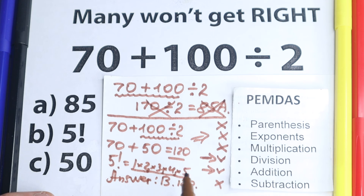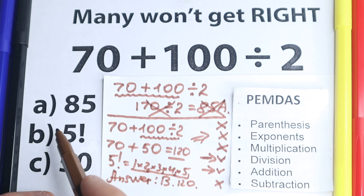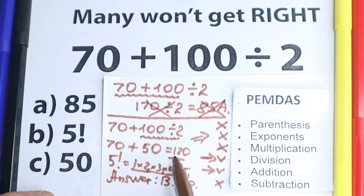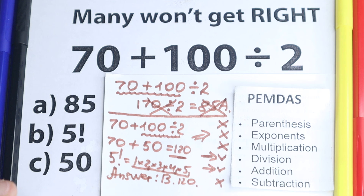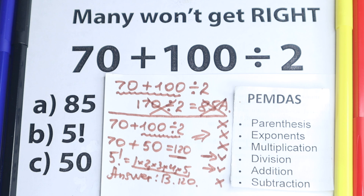I hope you understand this explanation. Always remember: division is before addition. According to the test, the correct answer is 5 factorial. According to PEMDAS, the correct answer is 120. Learn this rule and don't forget it — it applies everywhere. It doesn't matter what order of operations system you use, division always comes before addition. See you in the next video and have a great day!